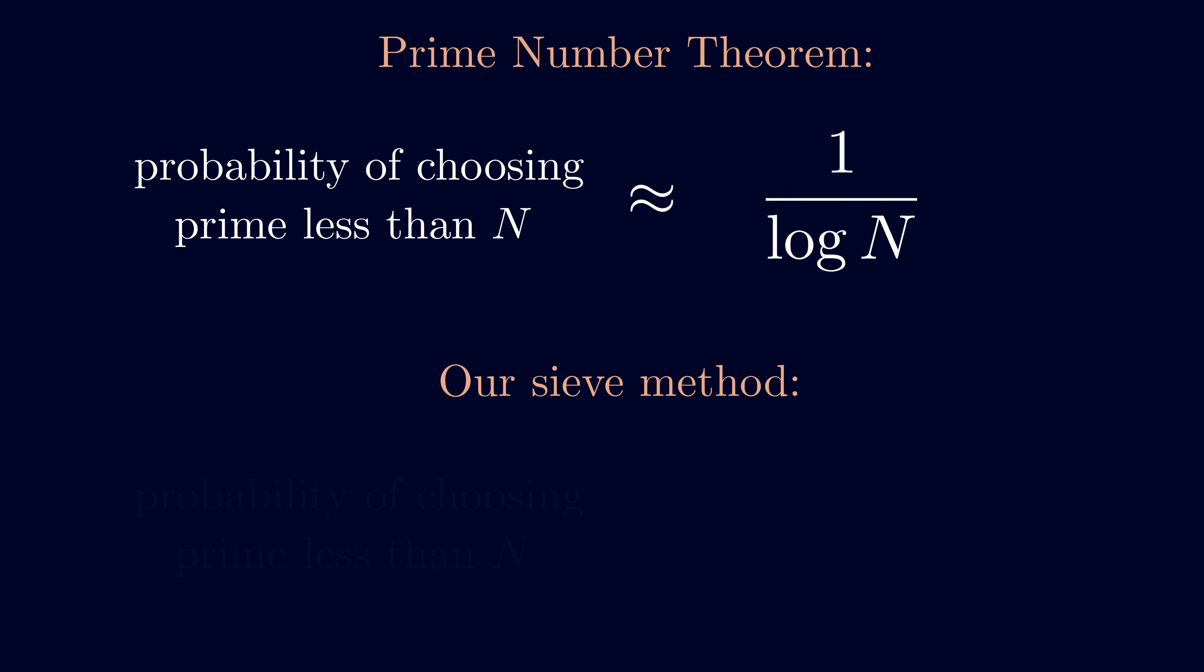As a warm-up, let's first prove the following. As a reminder, here's what the prime number theorem says. We'll use a sieve to prove something weaker. This probability is at most 1 over log log n.